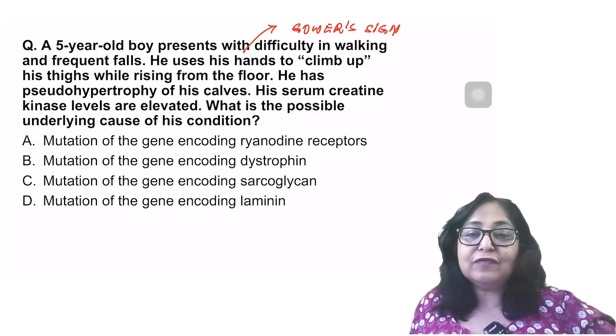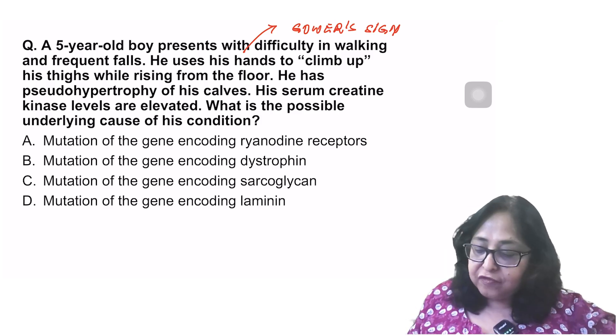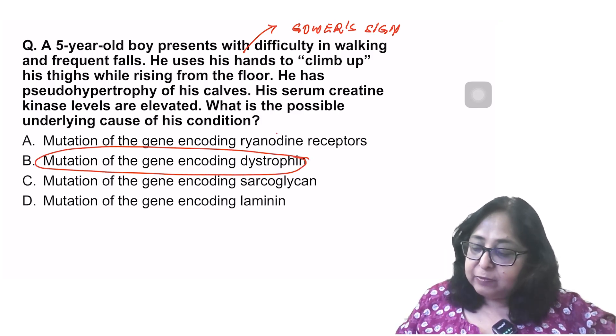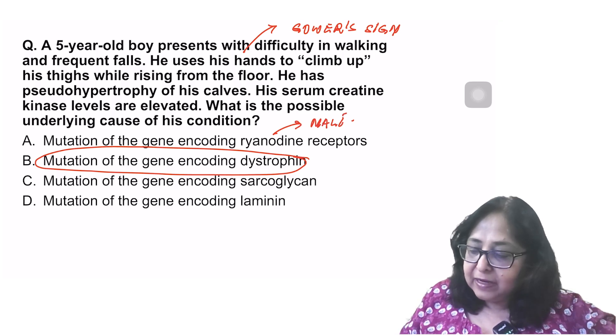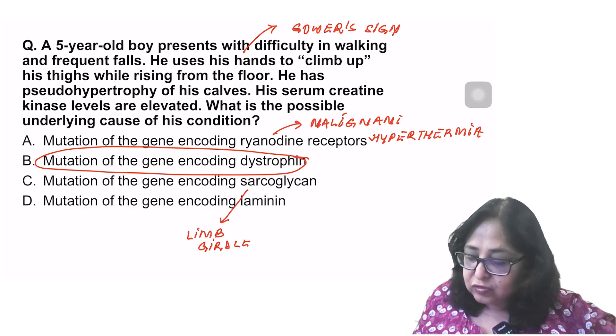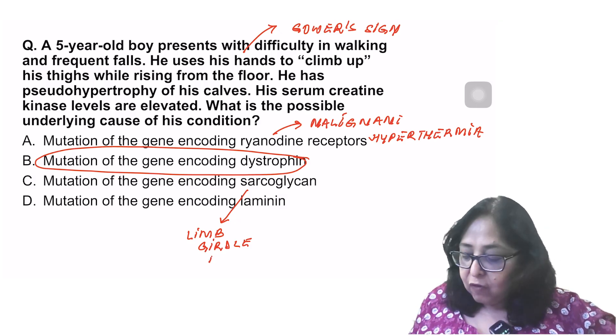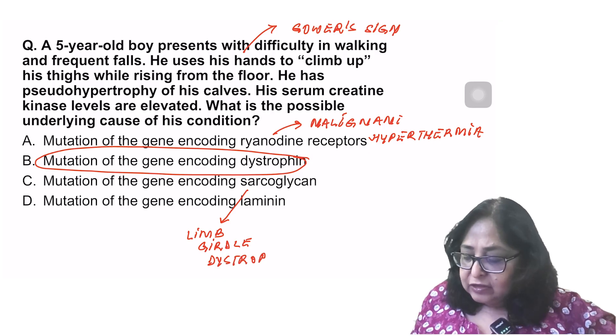Now this is a typical case of Duchenne's muscular dystrophy, where there is absence of functional dystrophin. If there's a mutation of the ryanodine receptor, it causes a malignant hyperthermia. If there is a mutation of the sarcoglycan, it causes what is known as the limb girdle dystrophy. This is also characterized by muscle weakness, but this is a milder form of the disease. So just let's have a look at the distroglycan sarcoglycan complex.